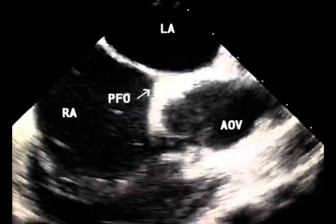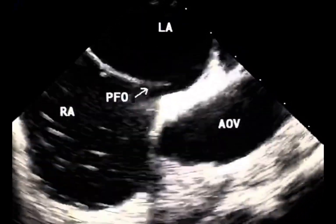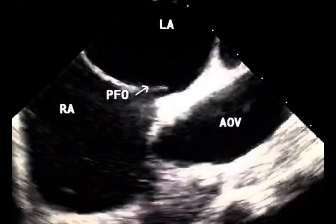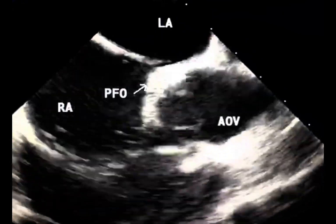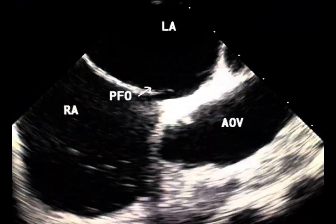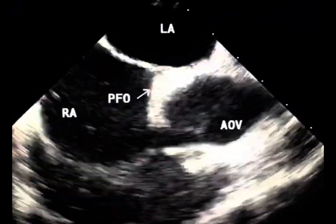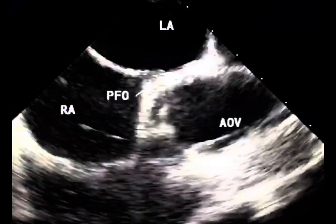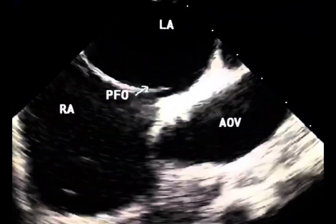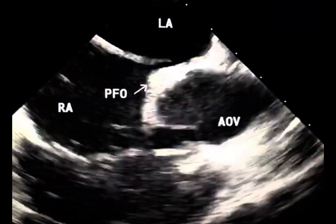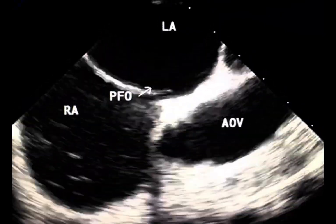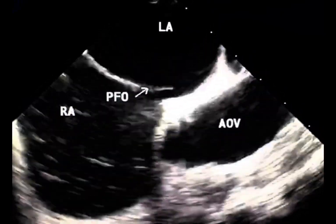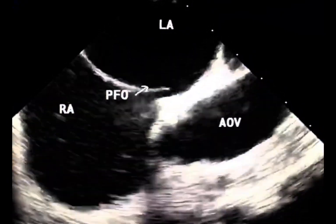In this view, a patent foramen ovale is also illustrated, which is a small interatrial septum shunt responsible for the passage of contrast bubbles from the right to the left heart.